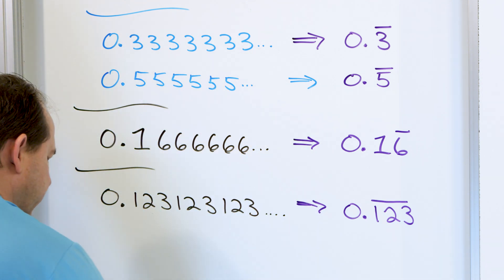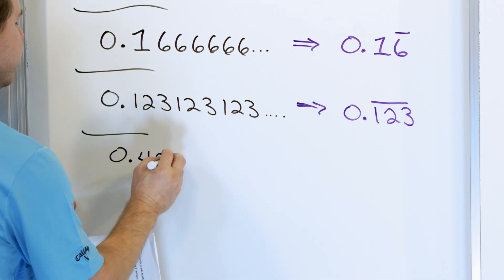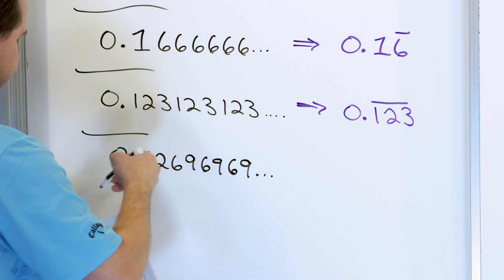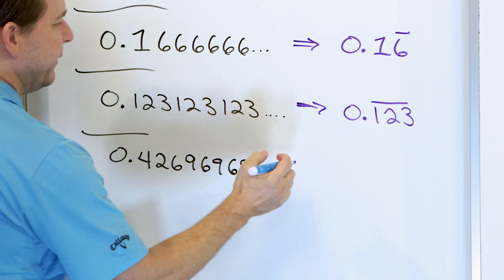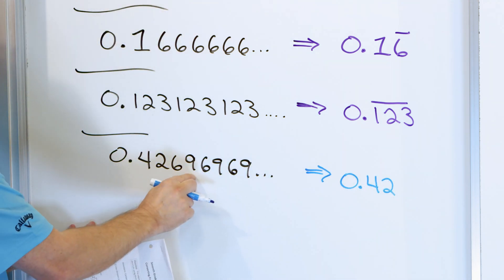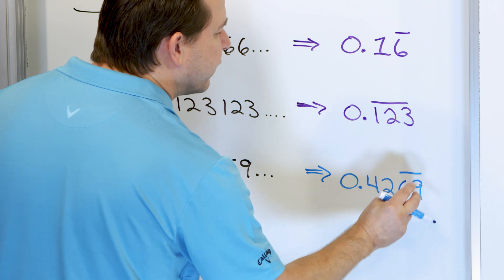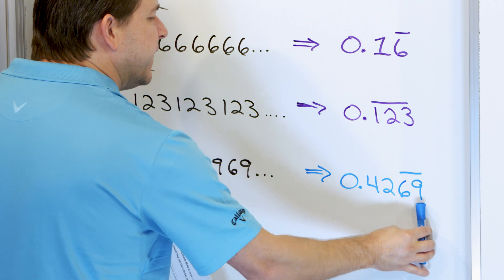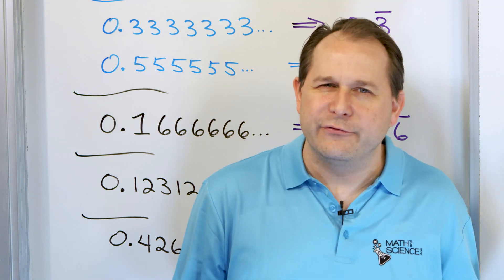One more example: what about 0.42696969...? The four and the two are not repeating, so those don't have bars — just 0.42. But after that, 6969 is what repeats. So we write a six and a nine with the bar over both. That gives us 0.426969696969..., which is exactly what we have. These are called repeating decimals — they all have a pattern.